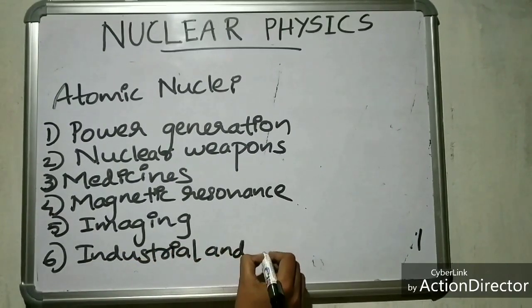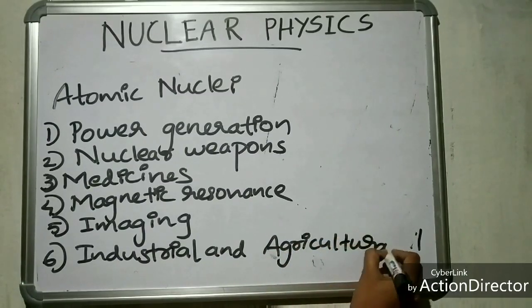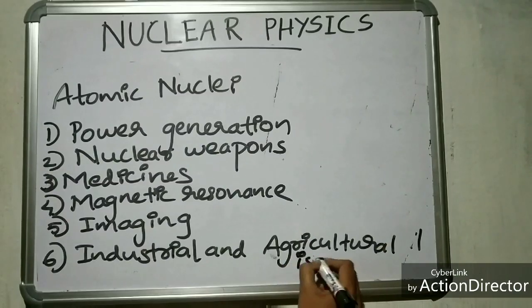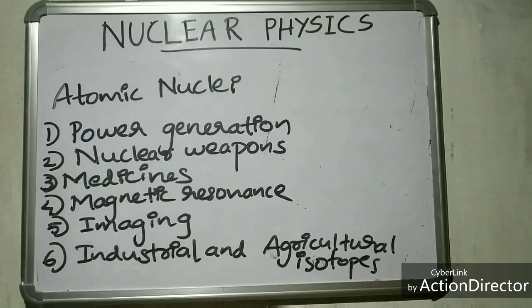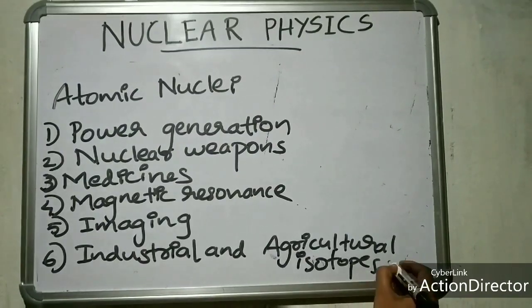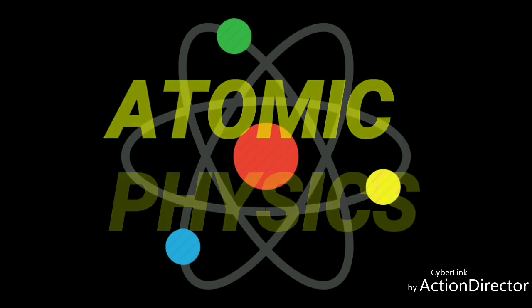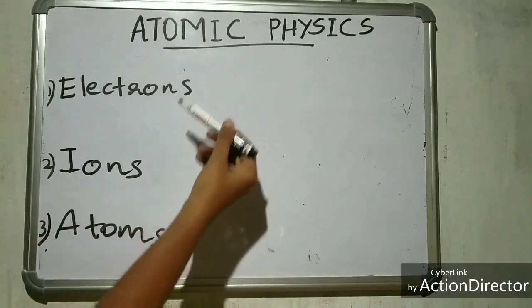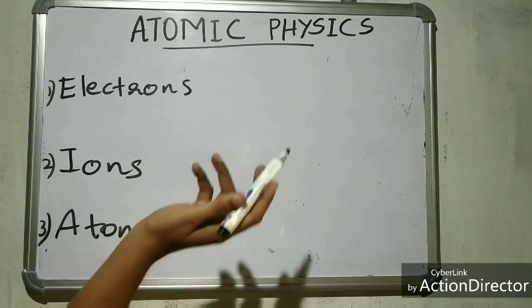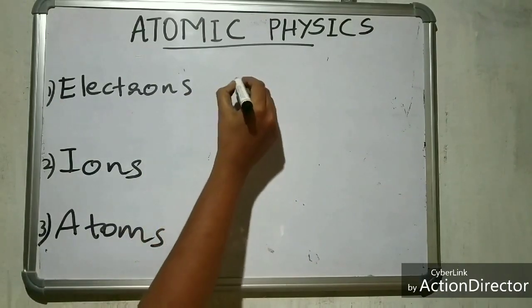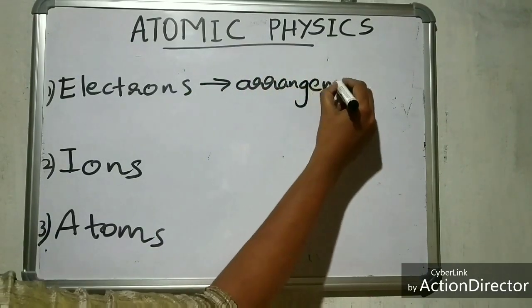Atomic physics mainly examine electrons, ions and neutral atoms. It is mainly concerned with the arrangement and behavior of electrons in the shells around the nucleus.